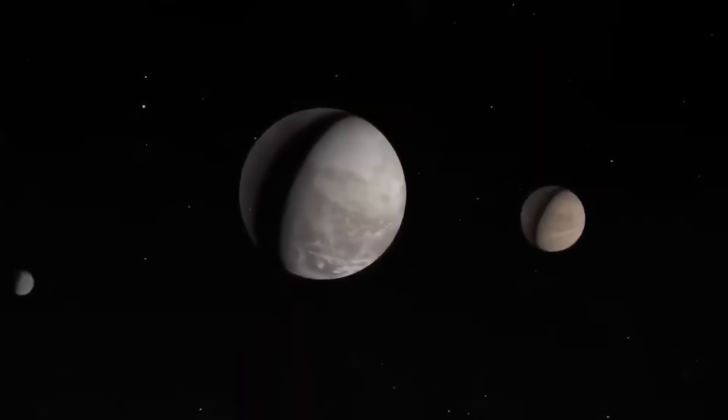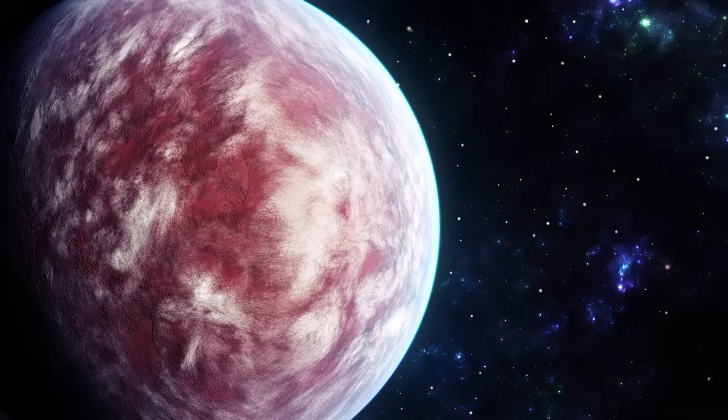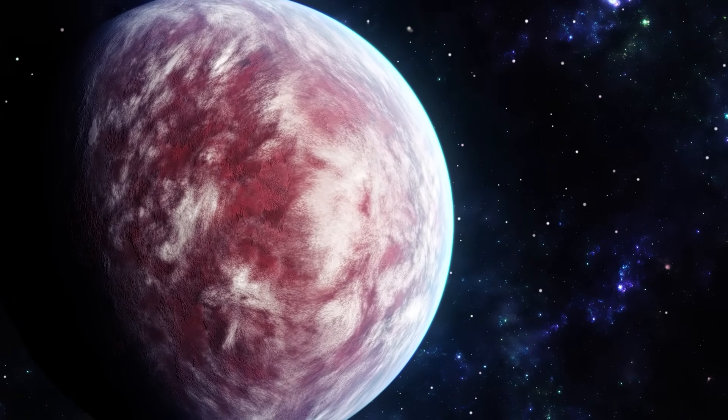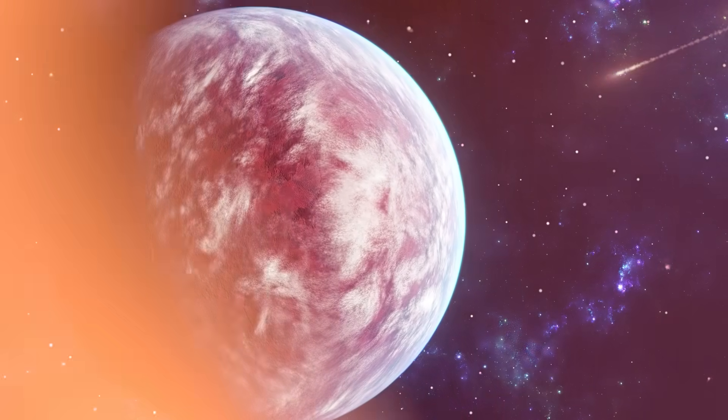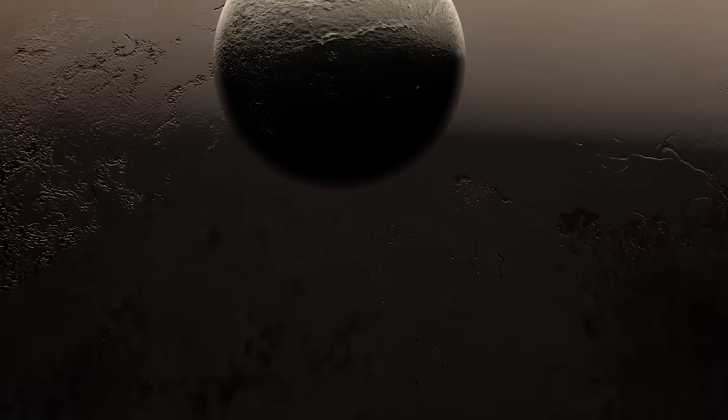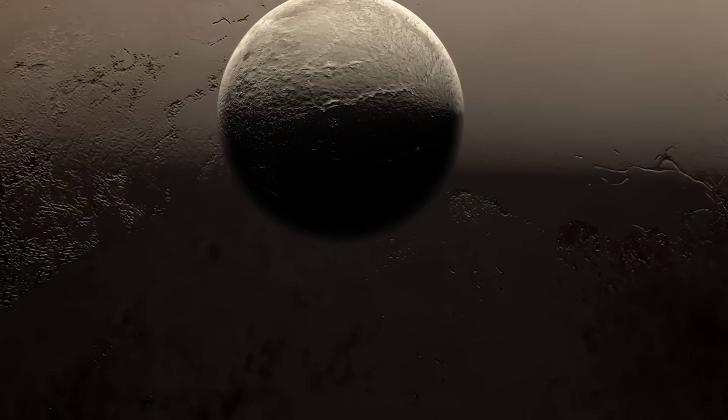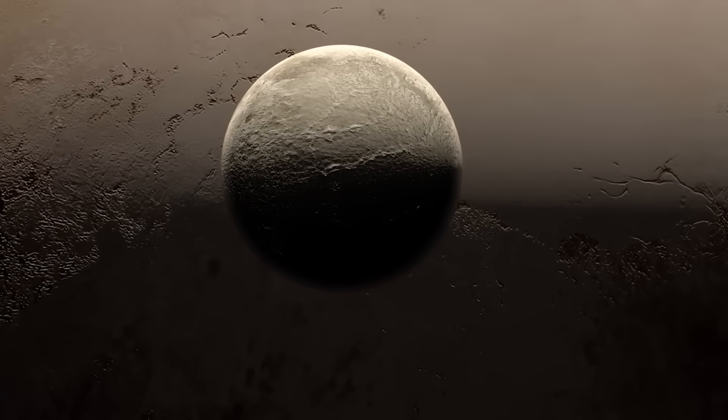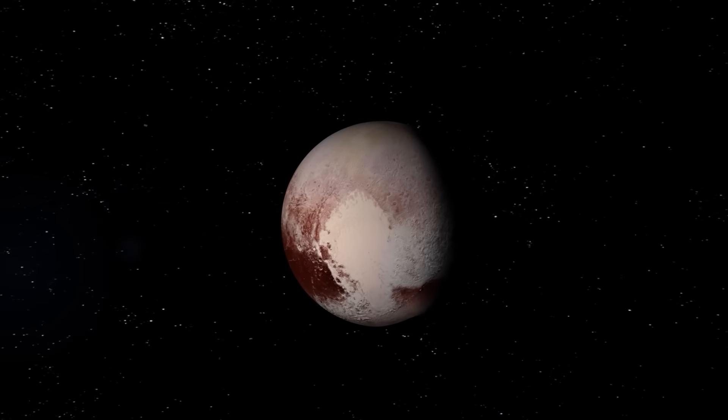Even more astonishing, Webb's data revealed that methane from Pluto's atmosphere is leaking into space and falling onto Charon, where sunlight transforms it into the reddish organic compounds seen on the moon's poles. In other words, Pluto is literally painting its moon.